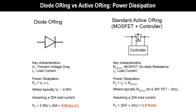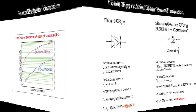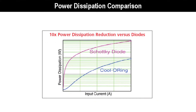A MOSFET that has an RDS_on of 2 milliohms delivering 20 amps will have a power dissipation of 0.8 watts, compared to the previous diode solution which had a power dissipation of 9 watts. As a power dissipation comparison, the active oring solution typically shows a 10x reduction in power dissipation, which increases system efficiencies and eases thermal management.